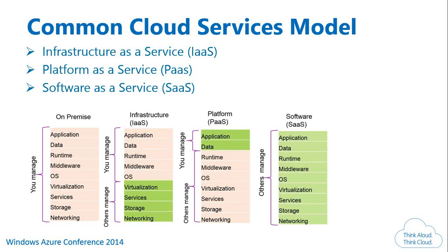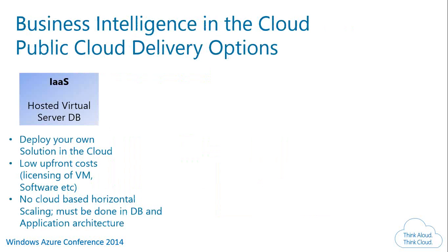All three service models can be implemented in three different modes: public cloud, private cloud, or hybrid cloud. In IaaS mode, you can deploy your own solution onto the cloud — whatever virtual machine you have, you can move it onto Azure. Licenses are mobile, so if you have bought on-premise licenses, you can migrate them to the cloud. The scaling of the architecture is handled by you.